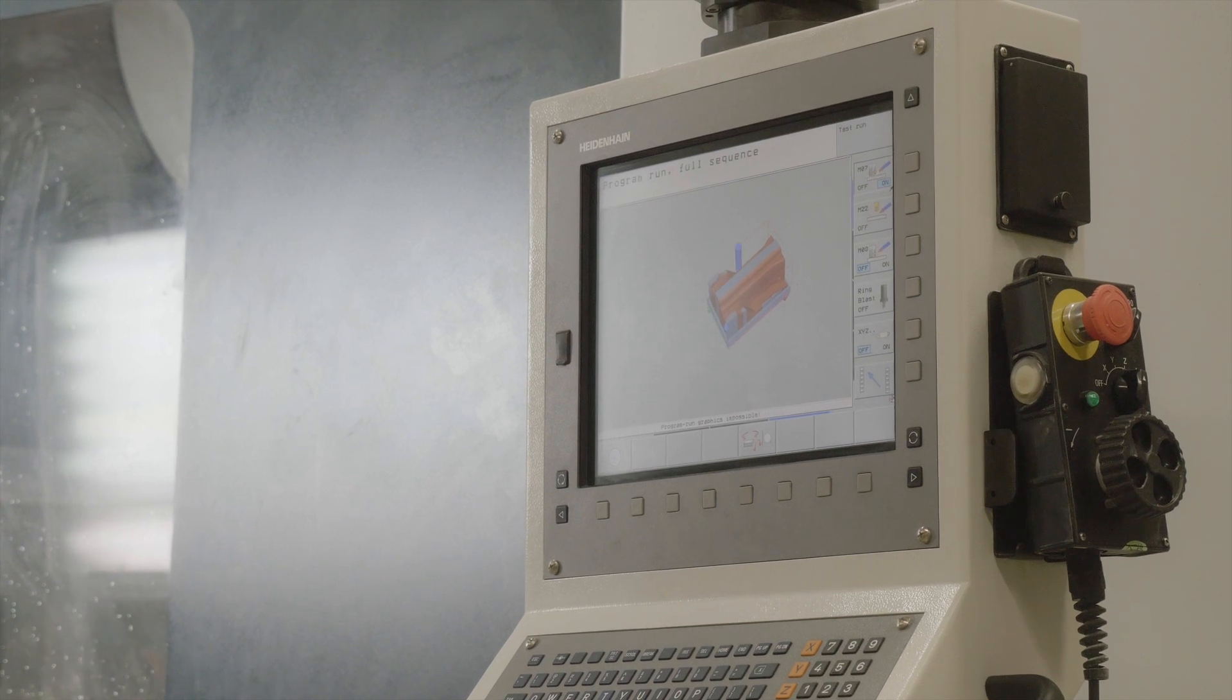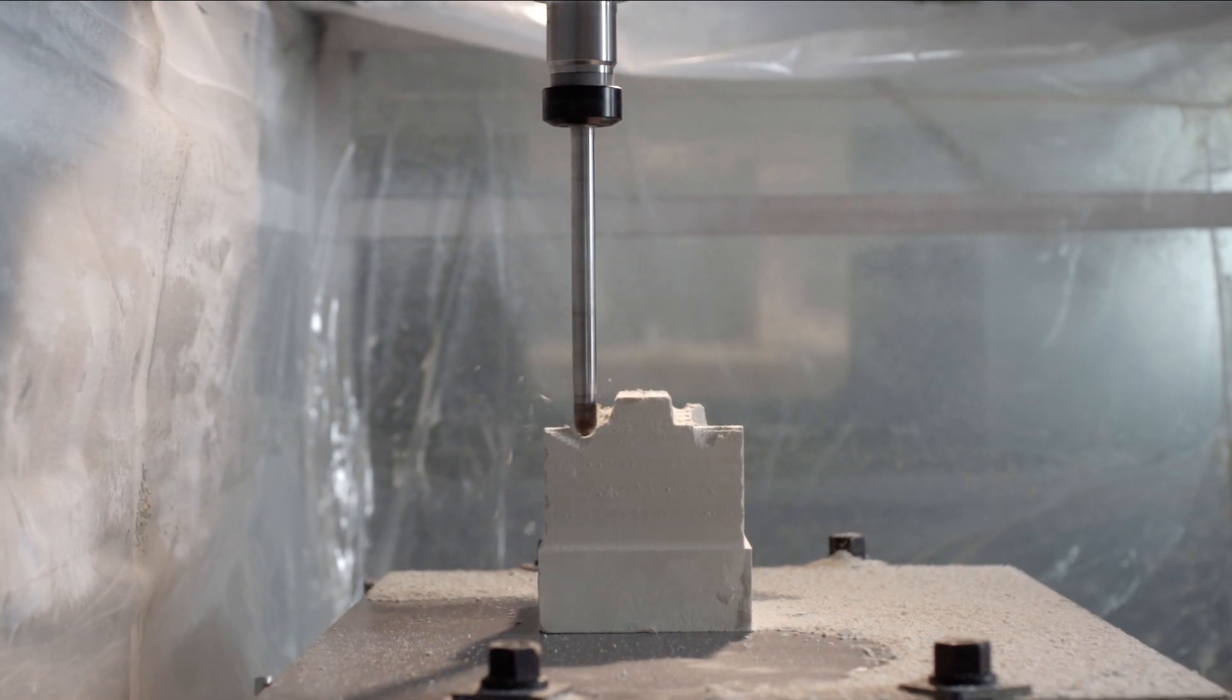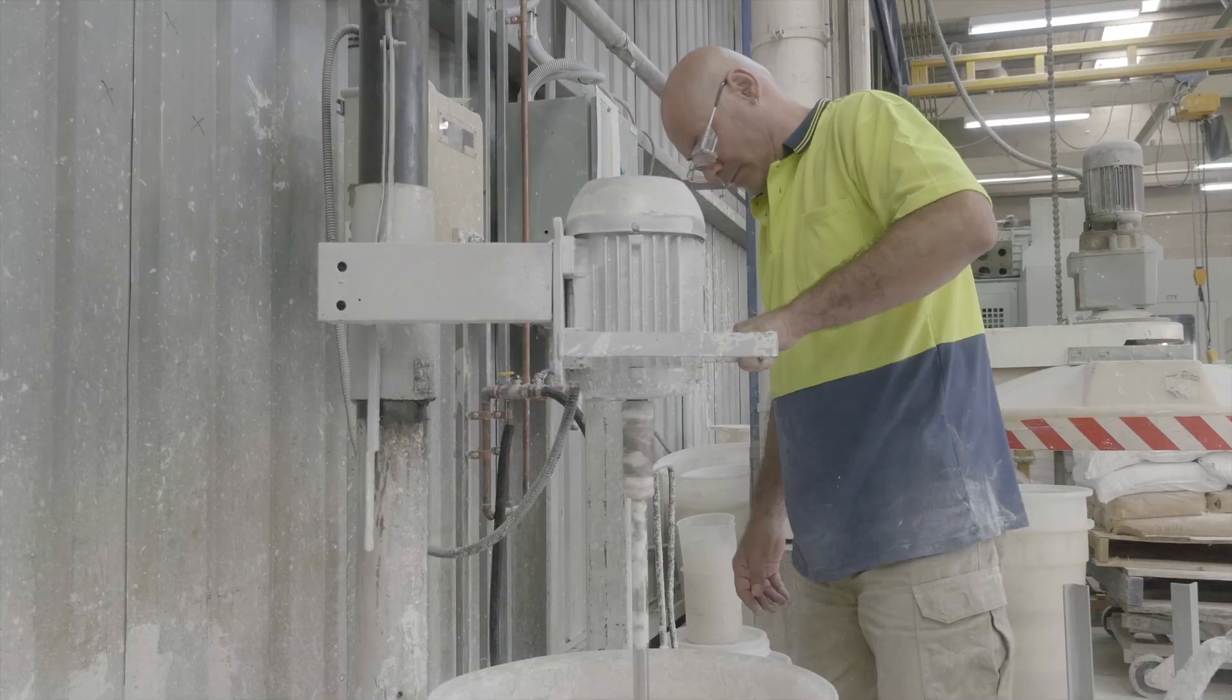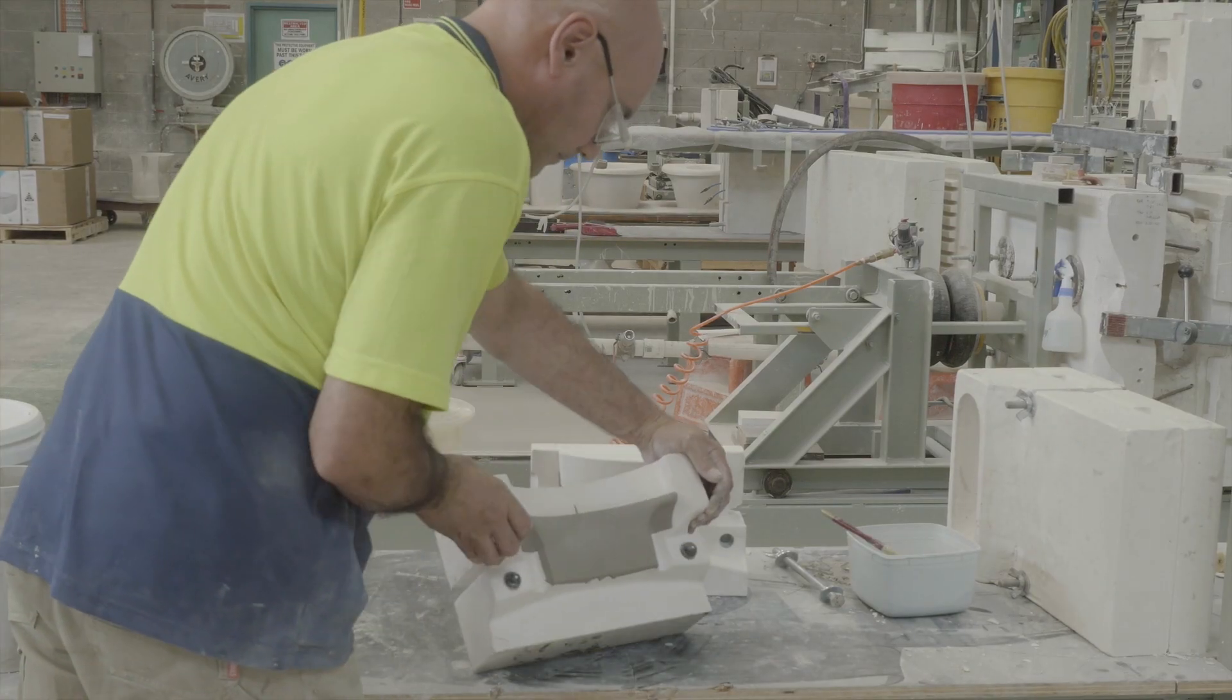So we went from prototypes built on our prototyping machine which were nice and consistent the same size every time to moving into ceramic which had variability just as part of the manufacturing process. That was the key thing for us was to make sure that we had a consistent flush.